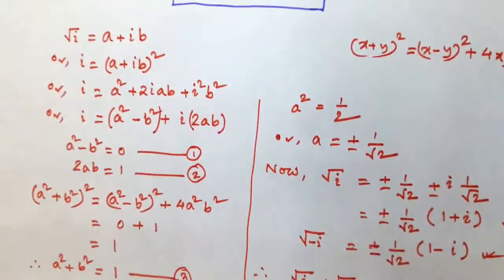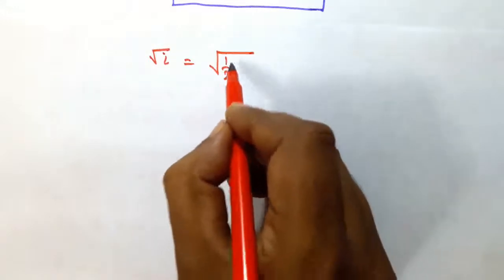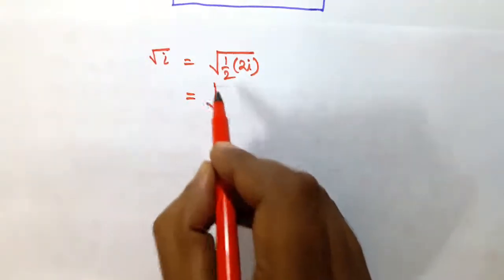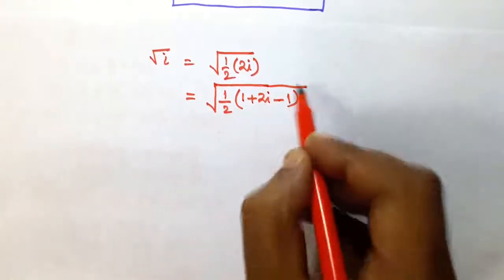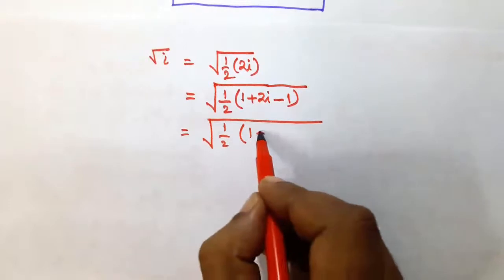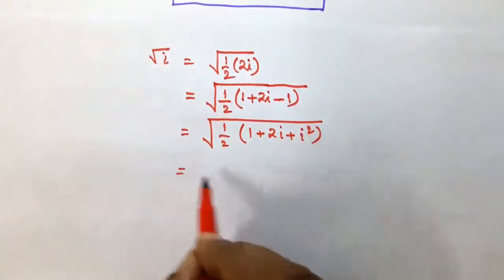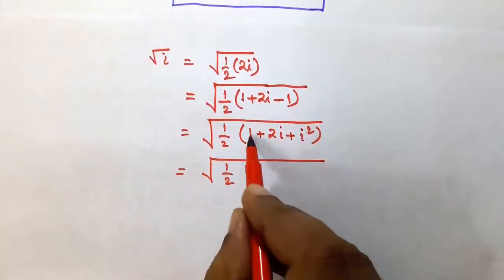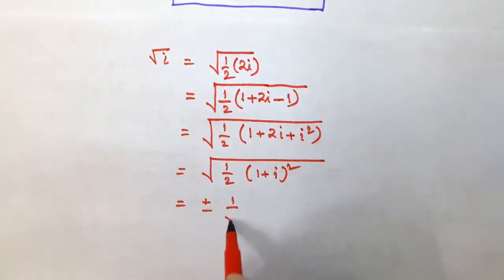There is another shortcut process to find root i, so let's try the shortcut method also. Root i can also be written as root over half into 2i, which equals root of half into (1 plus 2i minus 1), since 1 minus 1 equals 0. This can be written as root of half into (1 plus 2i plus i squared), since i squared equals minus 1. So this is root of (1 by 2) into (1 plus i) squared, giving plus or minus 1 by root 2 into (1 plus i).